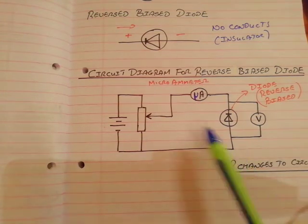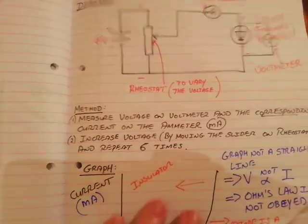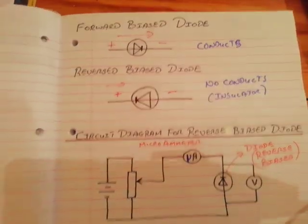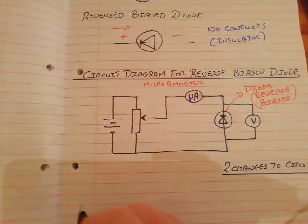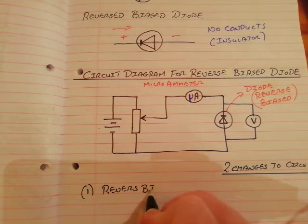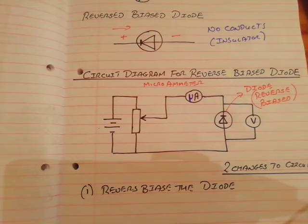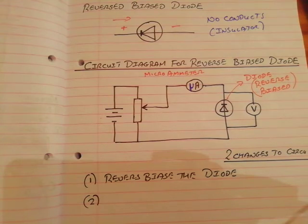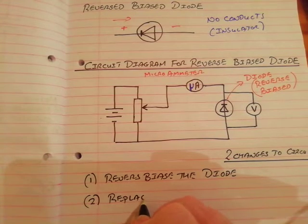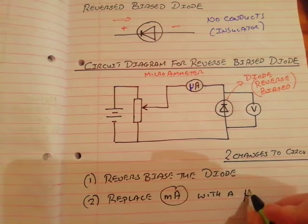If you reverse bias a diode, what changes do you make to the circuit? The first change: you reverse bias the diode — you turn the diode around. The second change: you take out the milliammeter and replace it with a more sensitive instrument, a microammeter.